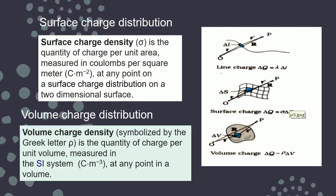For surface charge distribution, when charge is distributed over the surface of a conductor, we define surface charge density, denoted by σ. Surface charge density σ is charge per unit area: σ = dq/dS (or dA). Its unit is coulomb per meter squared (C/m²).